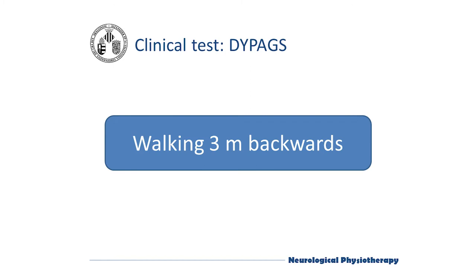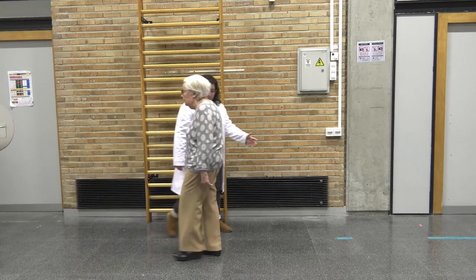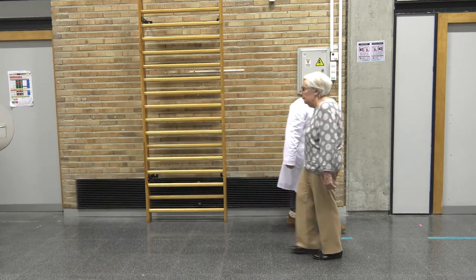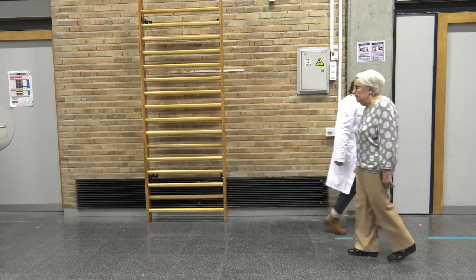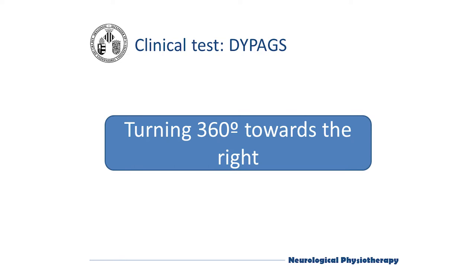Walking three meters backwards, we walk the three meters next to the patient to attend to a possible loss of balance. This item is scored as the one before, so if there are no hesitations or blocks and the patient walks the full distance without losing balance, the score will be zero.